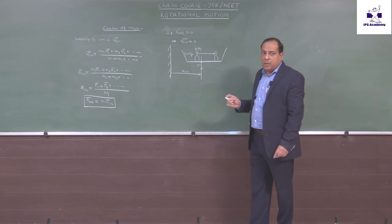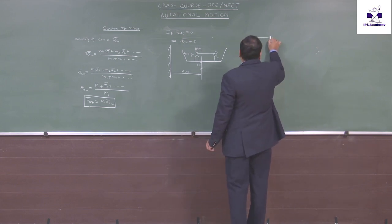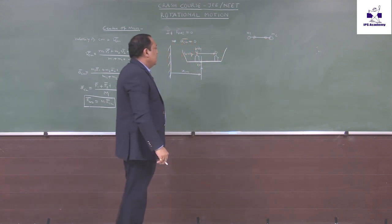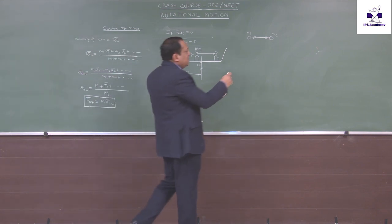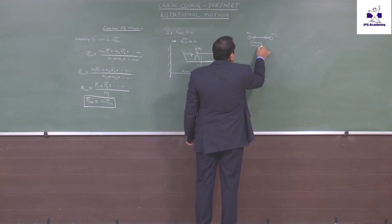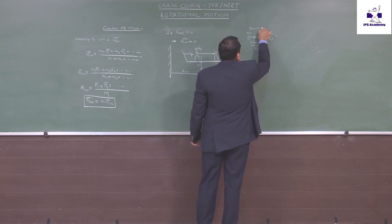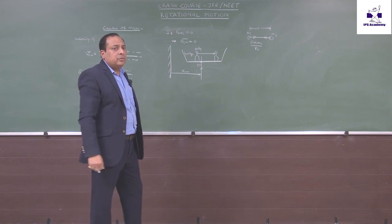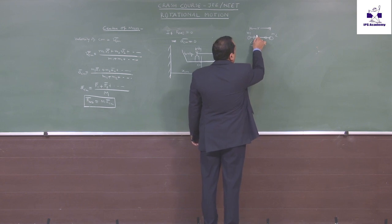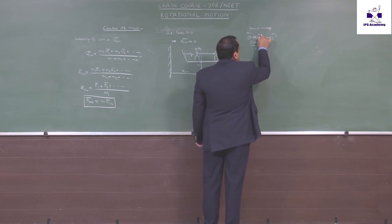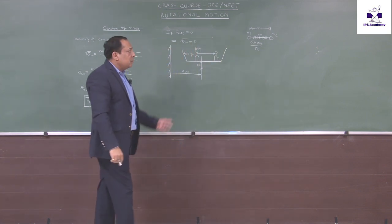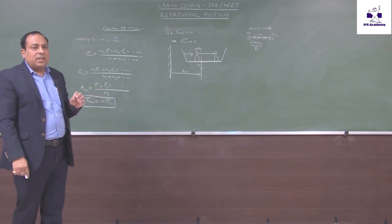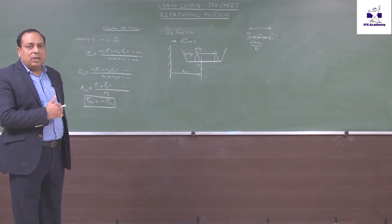Likewise, if two masses m1 and m2 experience gravitational attraction (force = G·m1·m2 / r²), and they move towards each other, the center of mass of the system will not change — because gravitational force here is an internal force, not an external force. When there is no external force, the center of mass will not change.